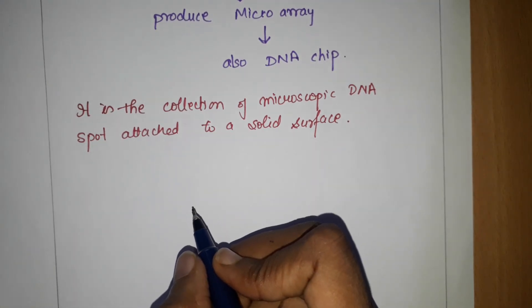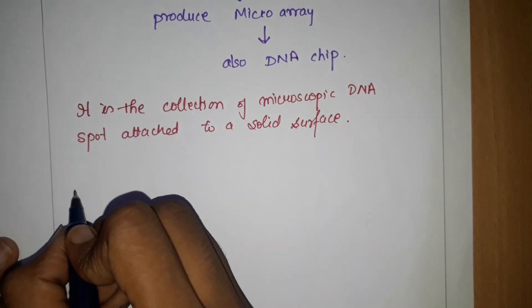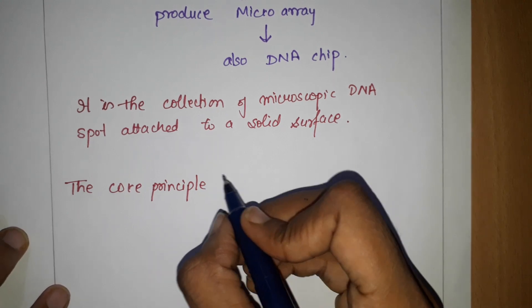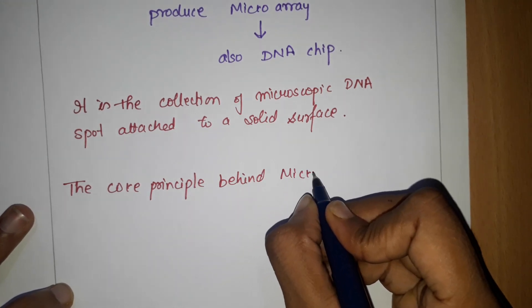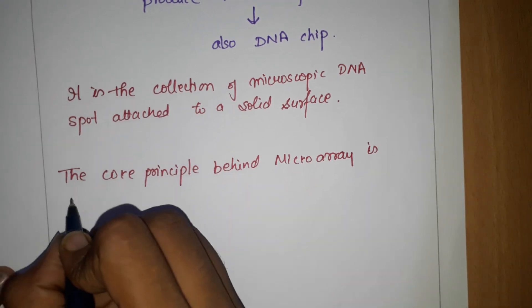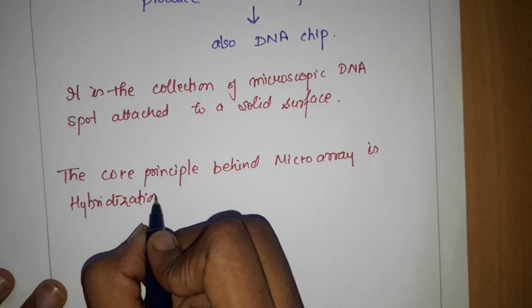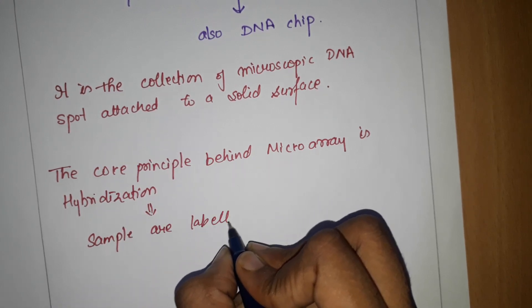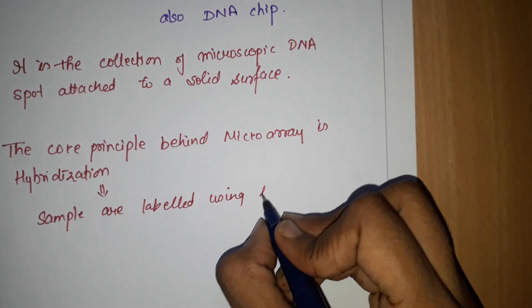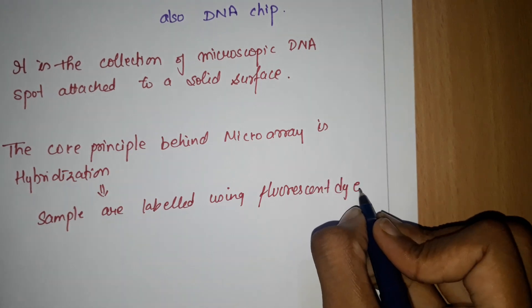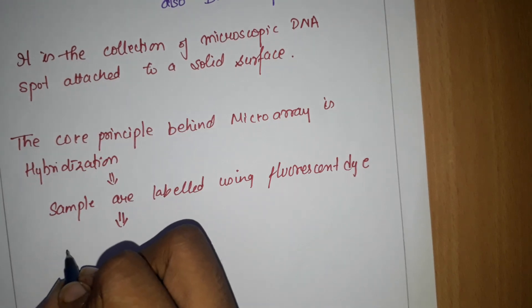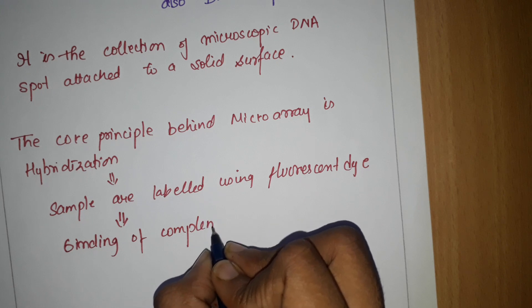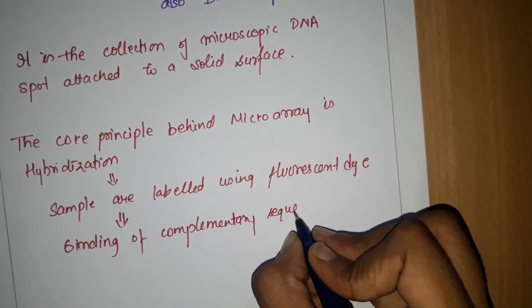Now what is the principle behind this microarray? The core principle behind microarray is hybridization. The samples are labeled by using fluorescent dye, and this will result in the binding of complementary sequences to each other.